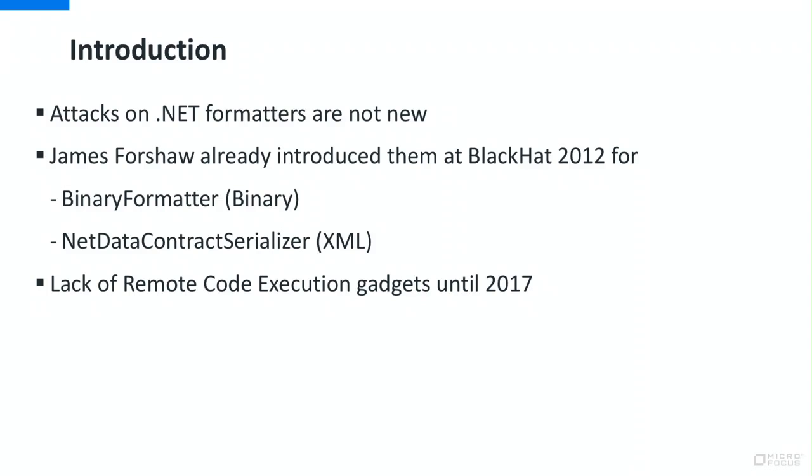As I said, this is nothing new. Back in 2012, James Forza from Google Project Zero was already presenting on how passing untrusted data to binary formatter or .NET data contract serializers could lead to malicious code being run. At that time, there was no remote execution gadget — he only presented a gadget that was able to delete files from the file system or initiate some SMB relay attacks.